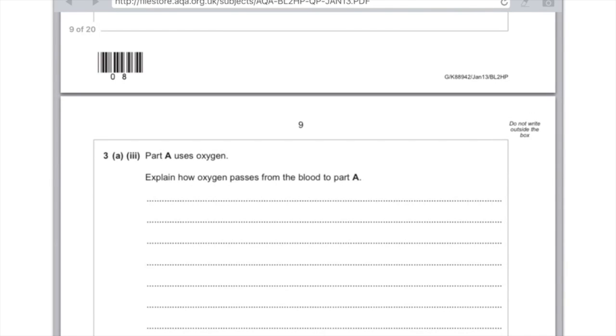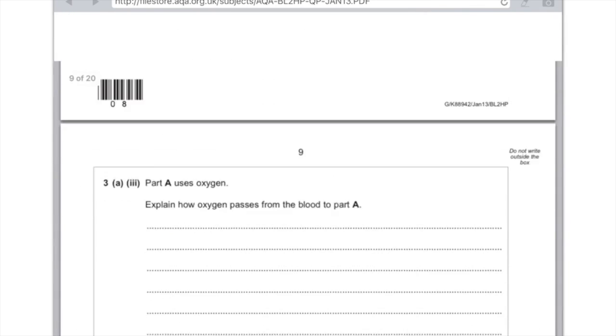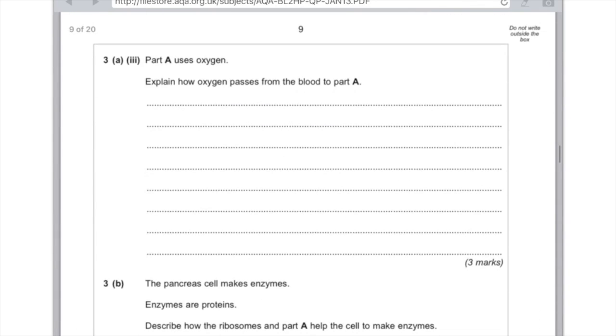Part 3. Part A uses oxygen. Explain how oxygen passes from the blood to part A. Oh, there's no diagram. Okay, you're going to have to pick up here that it's about diffusion. And you need to say that oxygen moves from an area of high concentration, which is in the blood, to a low concentration in the mitochondria. And you need to say that that occurs across the cell membrane. Remember it's not partially permeable here because we're not talking about osmosis.